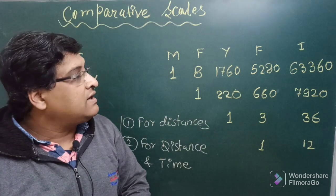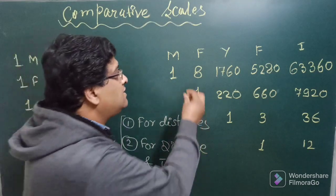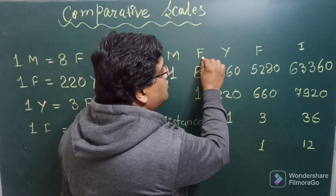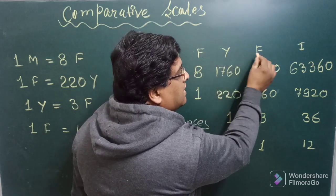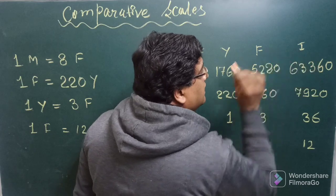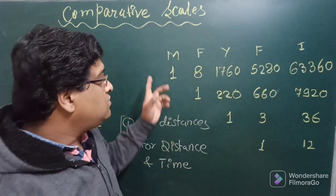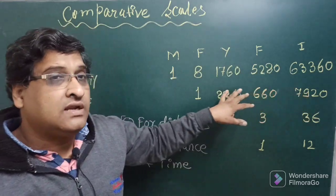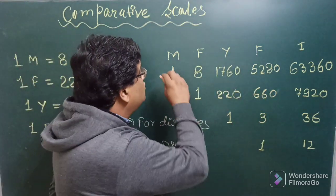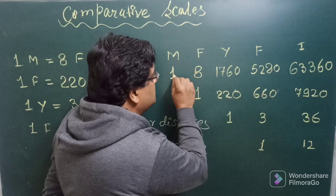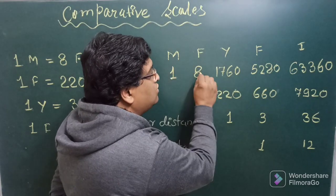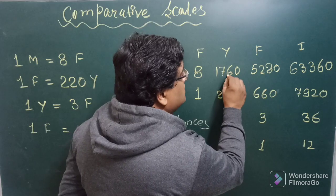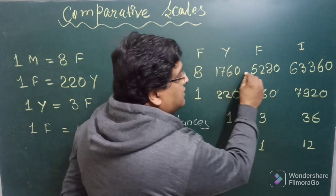Before moving to the explanation of comparative scales, here I have provided some conversion factors for English units. The notations are: M for miles, F for furlongs, Y for yards, F for feet, and I for inches. Memorize these conversions so you will not face any problems while solving questions on comparative scales. One mile is equal to eight furlongs.